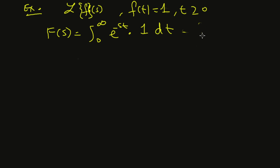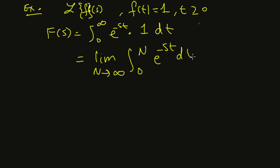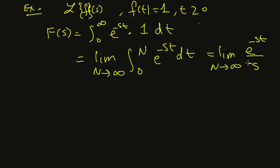Switching to the improper integral form, we write the limit as n approaches infinity of the integral from zero to n of e to the negative st dt. Finding the antiderivative gives us e to the negative st over negative s, evaluated from zero to n.